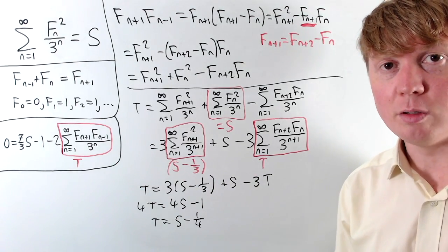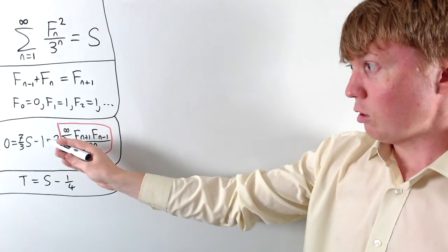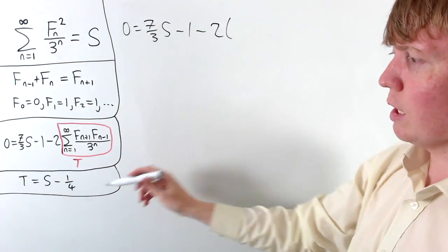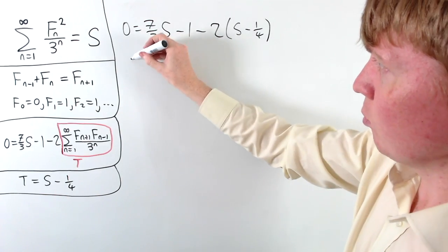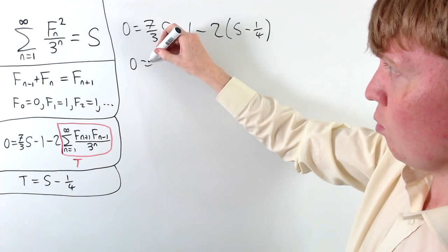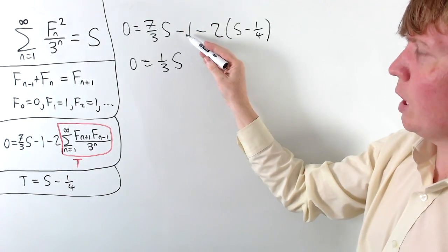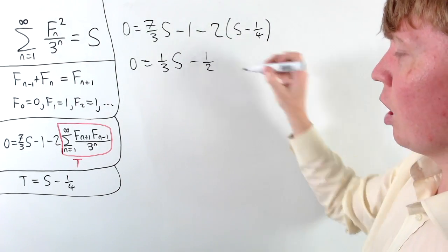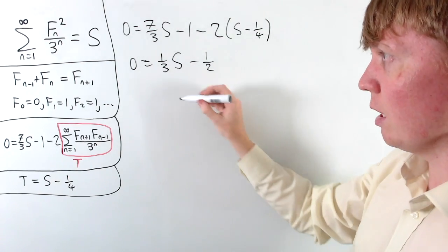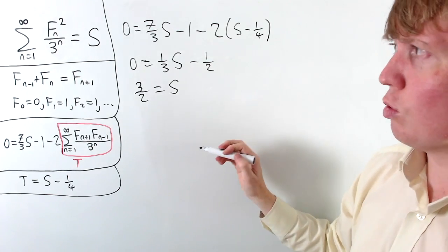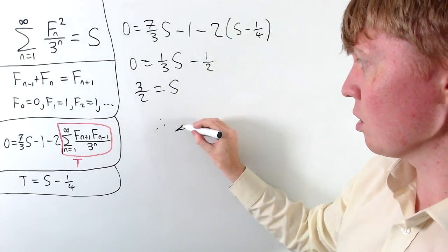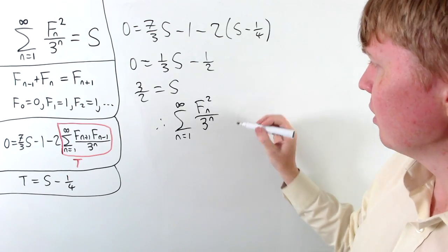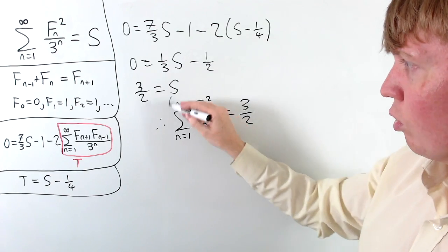We substitute T = S minus one quarter back into our equation: 0 equals 7 thirds S minus 1 minus 2 times (S minus one quarter). This gives 0 equals one third times S minus one half. Taking the one half to the left and multiplying by 3, we get S equals 3 over 2. So the sum from n=1 to infinity of the nth Fibonacci number squared divided by 3 to the n equals 3 over 2, or one and a half.